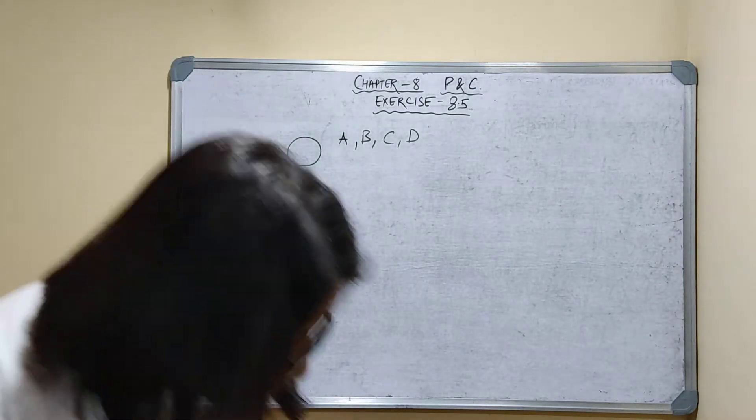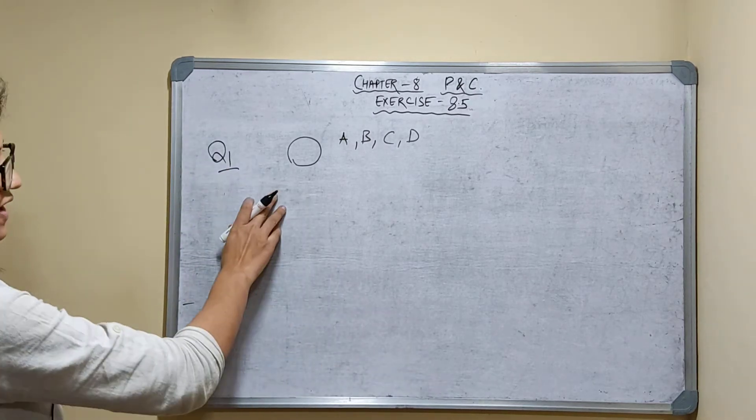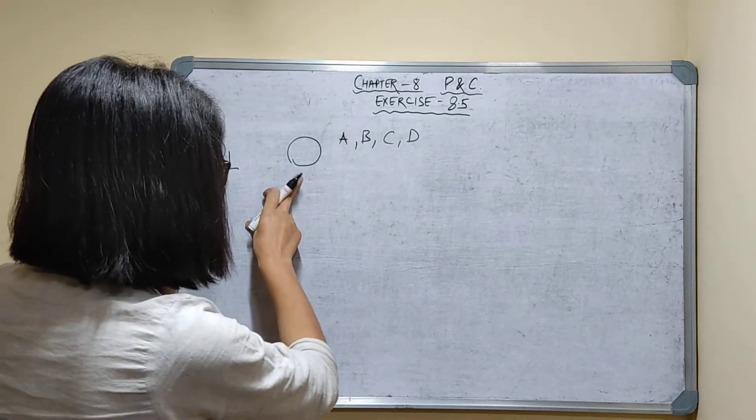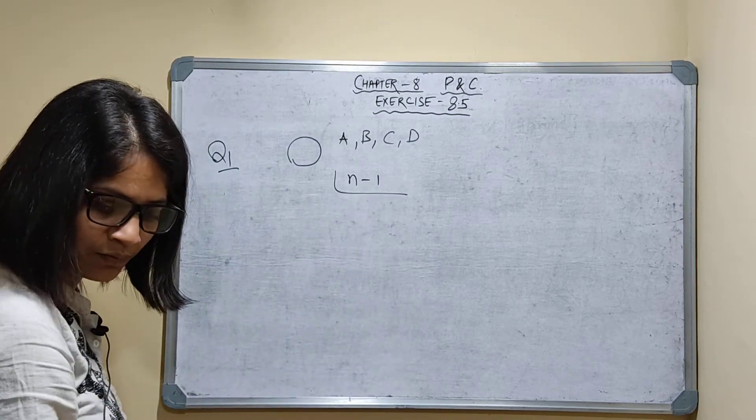So what is the formula? The number of ways of arranging n objects around a round table is factorial of n minus 1.